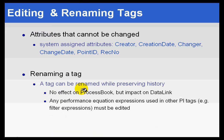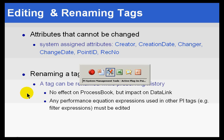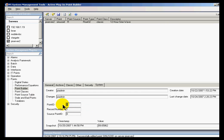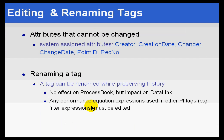Now, if for some reason you need to rename a tag, you can do that — that's not a problem. It will preserve all the history and it won't have any effect on PI ProcessBook, because ProcessBook makes reference to these tags with their internal ID. As you can see here, this is the Point ID. Each tag has a Point ID. This is the tag Sinusoid, and it's the first tag created in every PI System — one of those default PI tags. If you do create the default tags, this is going to be your Point Number One. And that's how we store the reference to that tag within ProcessBook.